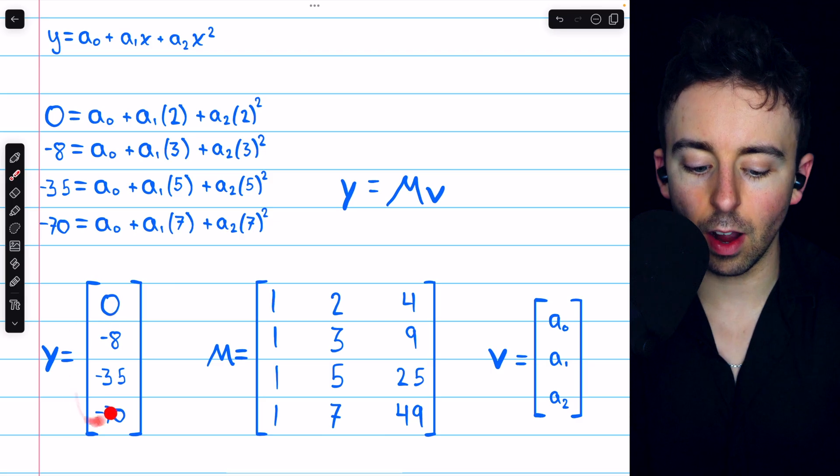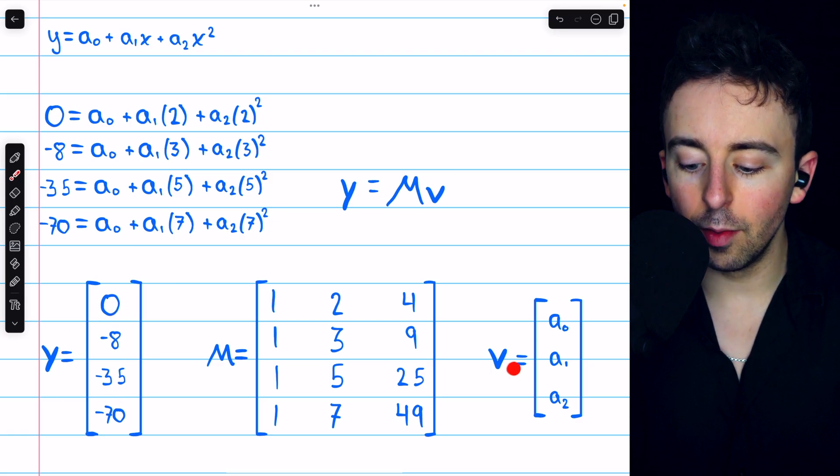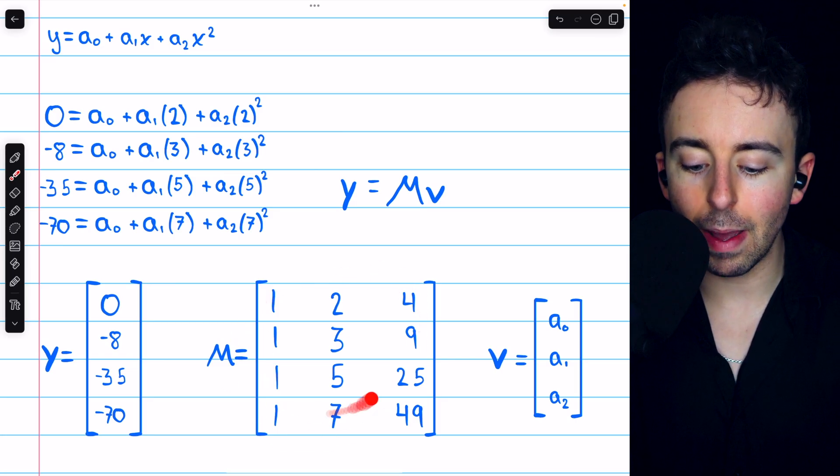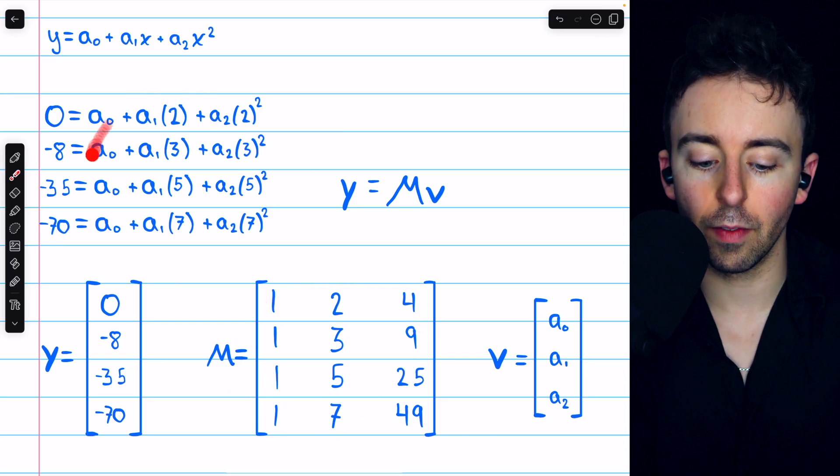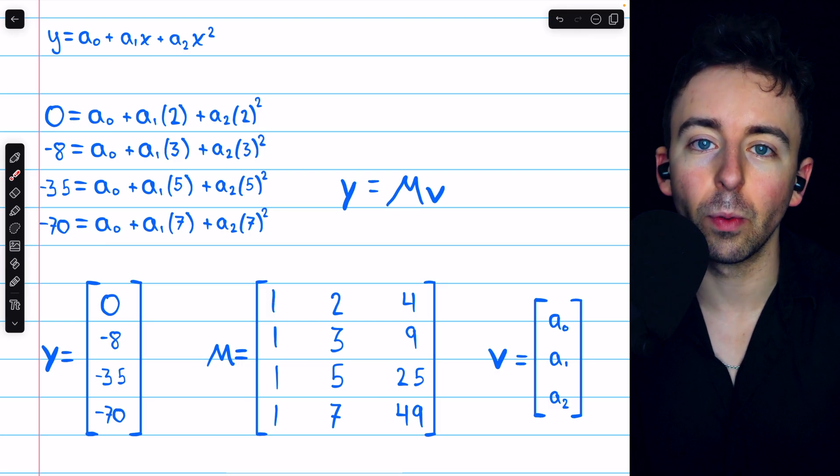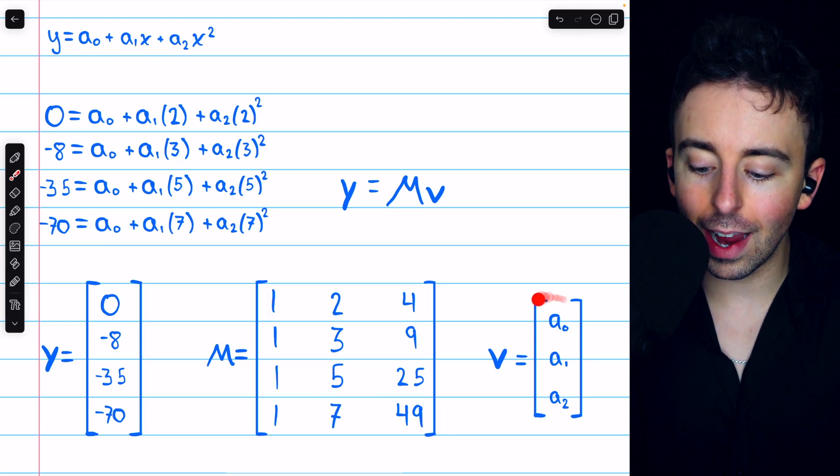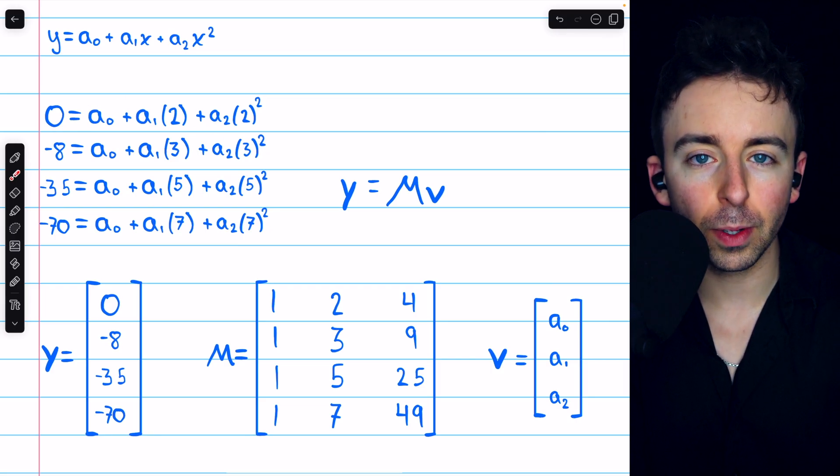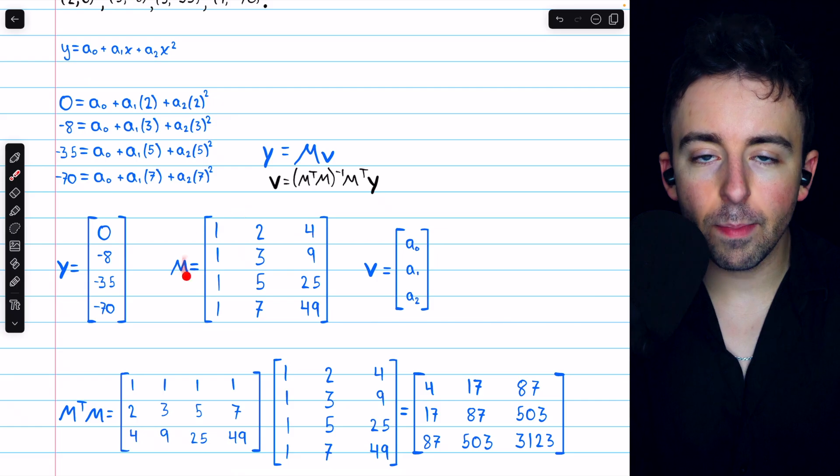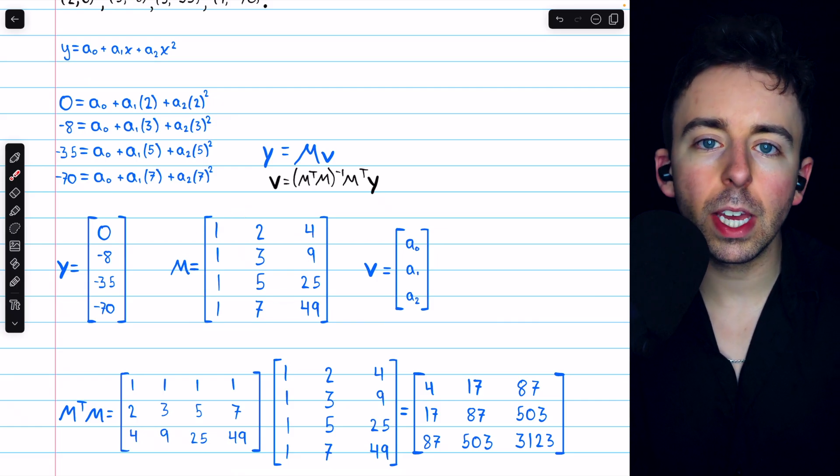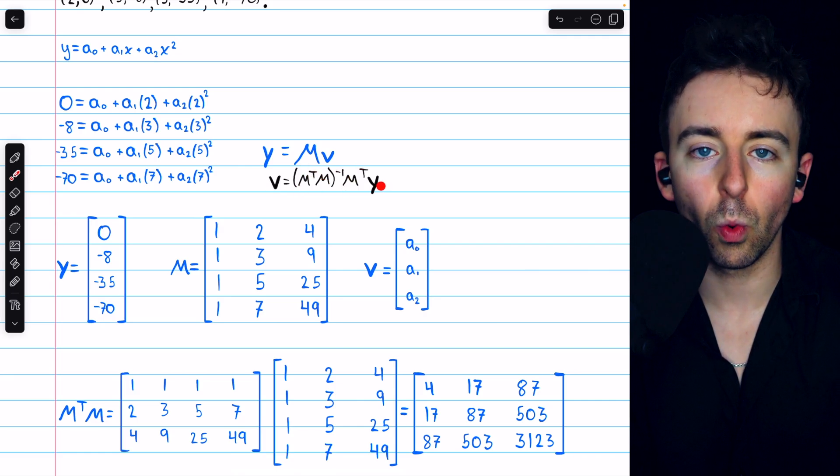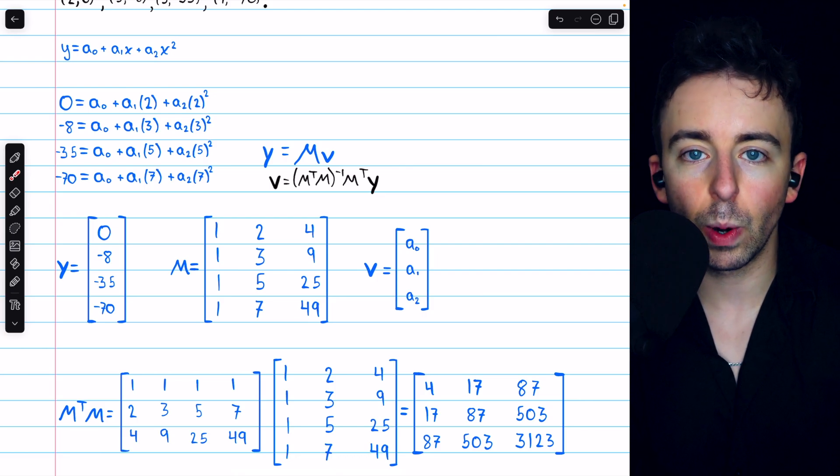So this system of equations is the same as y equals m times v, where of course, y is the column vector of the y-coordinates, v is the column vector of the unknown coefficients, and m is the matrix consisting of the coefficients of those unknowns, a0, a1, and a2. Now, we're going to find the vector v that makes this system as close to true as possible by using the normal equation. Now, this matrix m is invertible, so we're going to be able to find a unique solution here. So we're looking for m transpose m inverse times m transpose times y. That will be our least square solution.